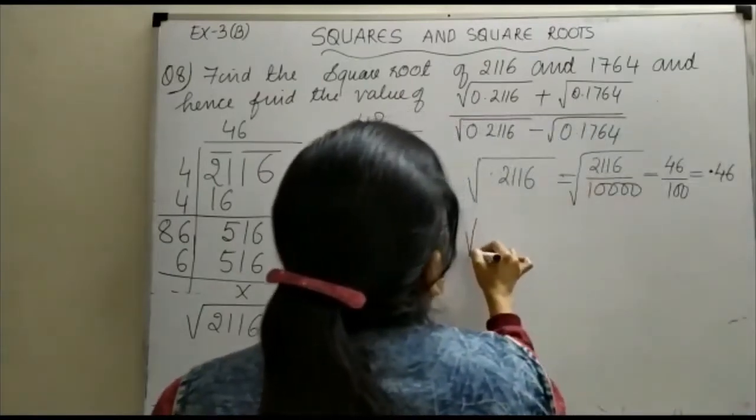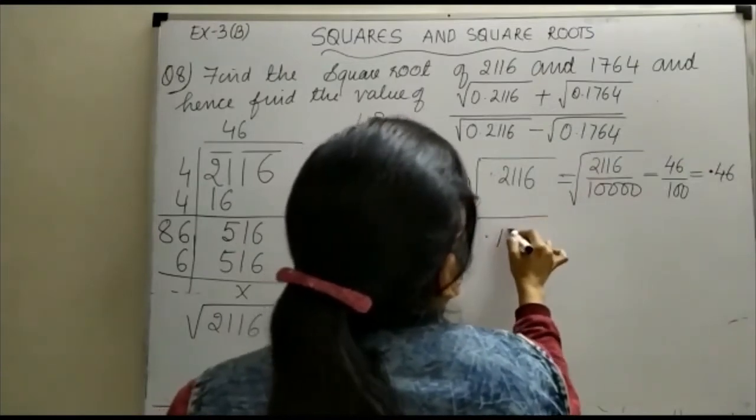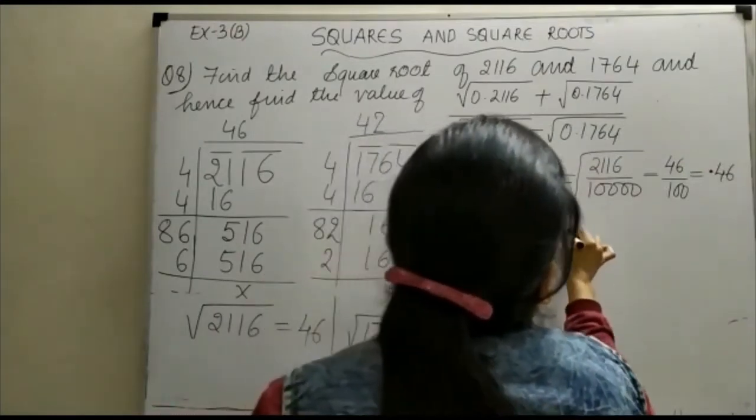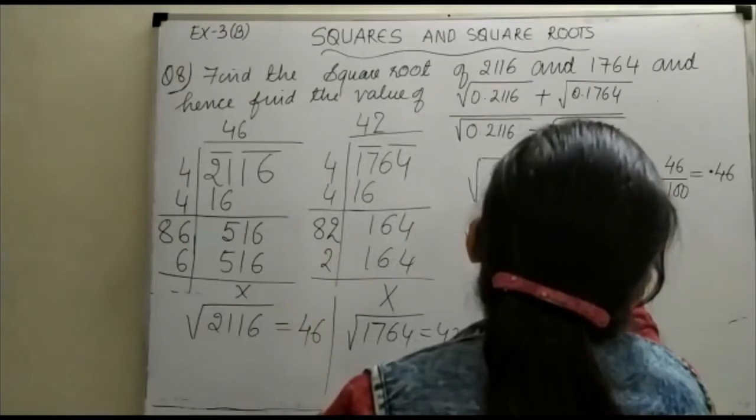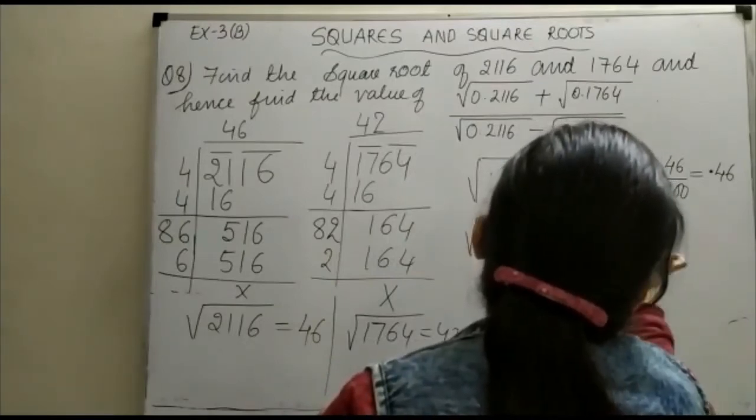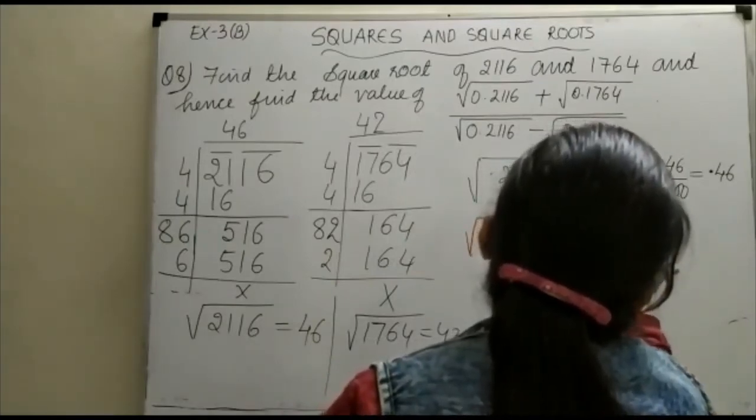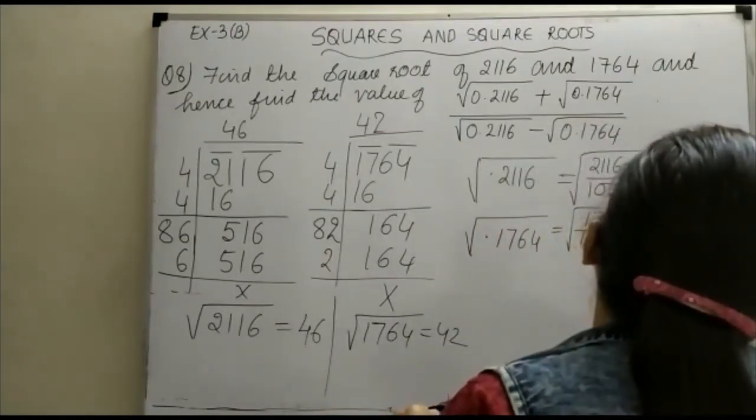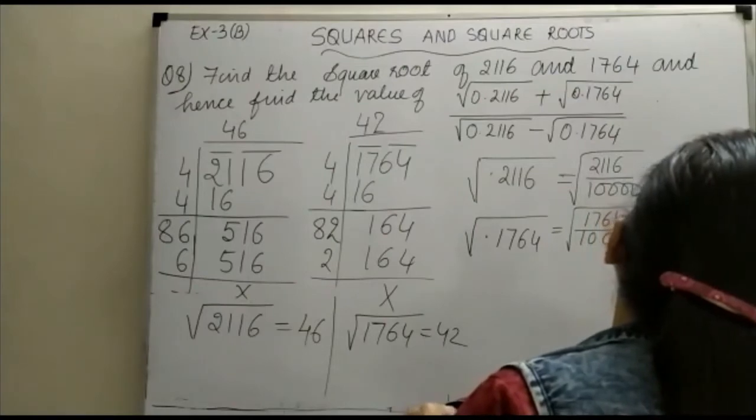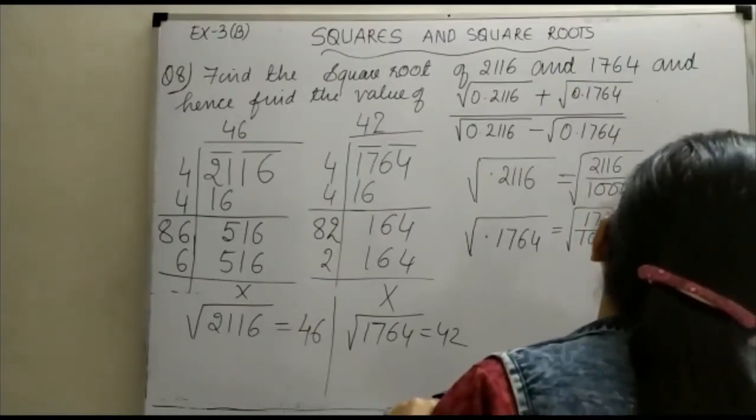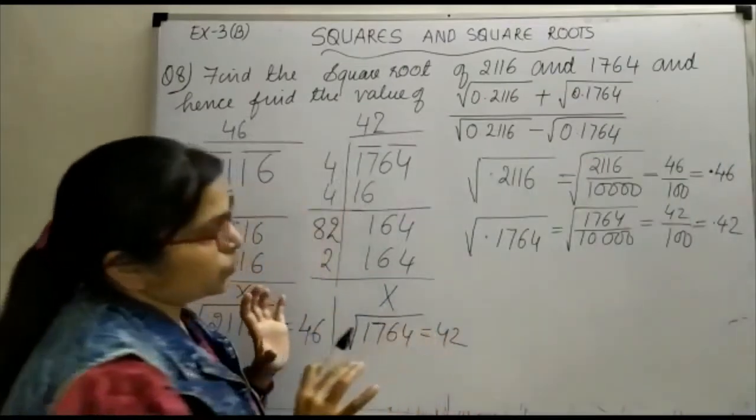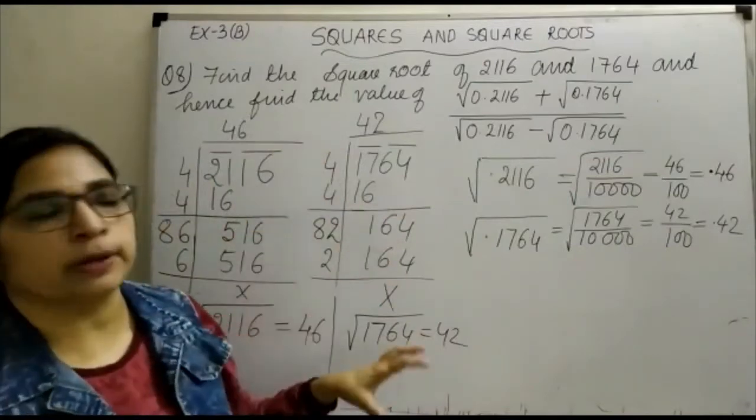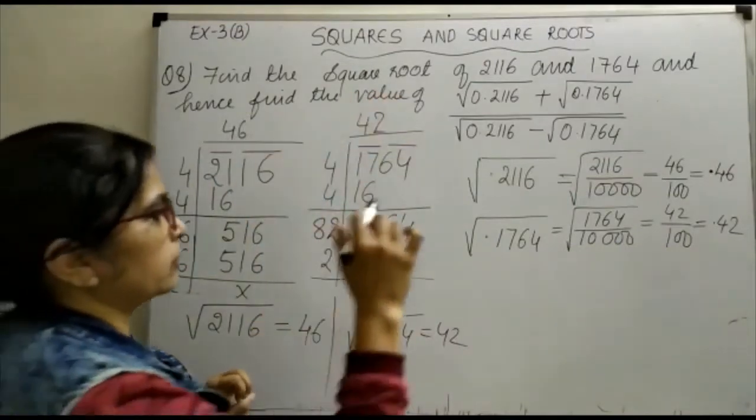इसी तरीके से आपने निकालोगे 0.1764. यह आपका हो जाएगा 1764 upon 10,000, and this will be again equal to 42 upon 100, and that is equal to 0.42. आपने जो नीचे question में दी गई थी, सारी evaluate कर ली. अब आपको यह term evaluate करना है.